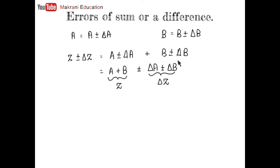This error part can have two possible values. One is delta A plus delta B, while the other is delta A minus delta B. You should always go for delta A plus delta B because error should always be considered maximum.